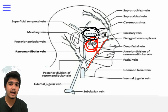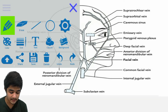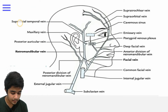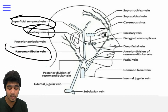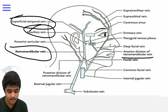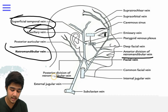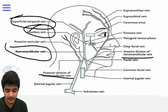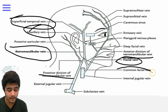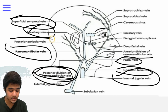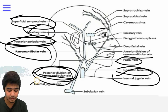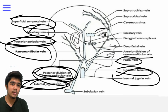Now briefly covering the rest of the venous drainage: the superior temporal vein and maxillary vein combine to form the retromandibular vein. The retromandibular vein divides into two parts — the anterior division combines with the facial vein to form the common facial vein, which drains into the internal jugular vein. The posterior division combines with the posterior auricular vein and drains into the external jugular vein.